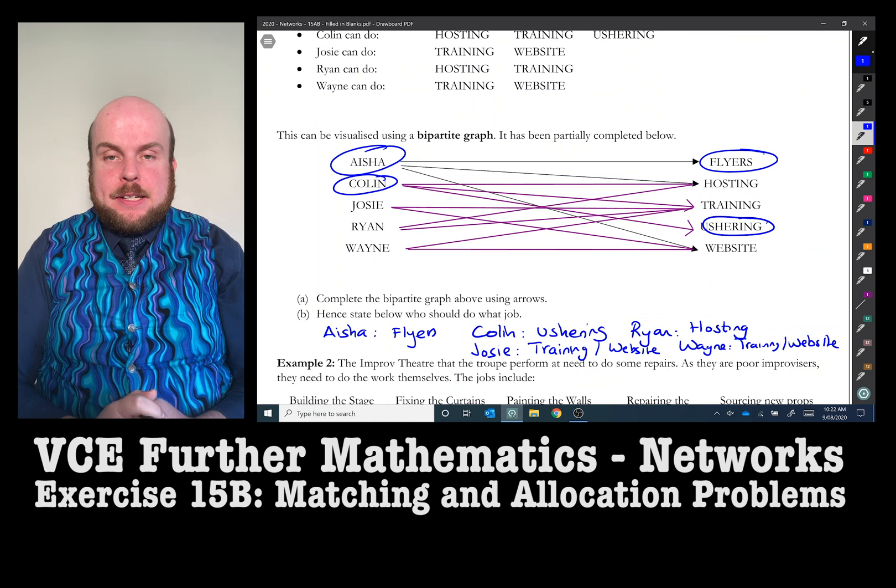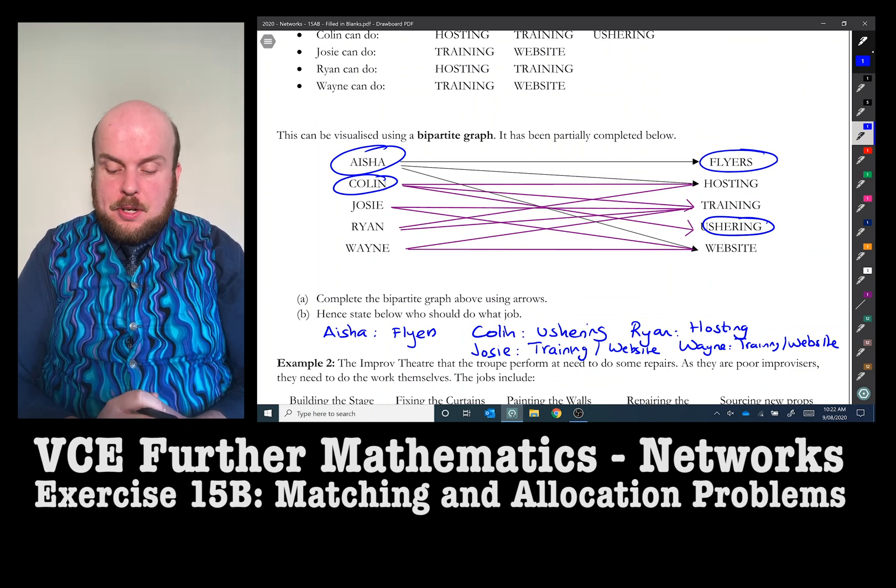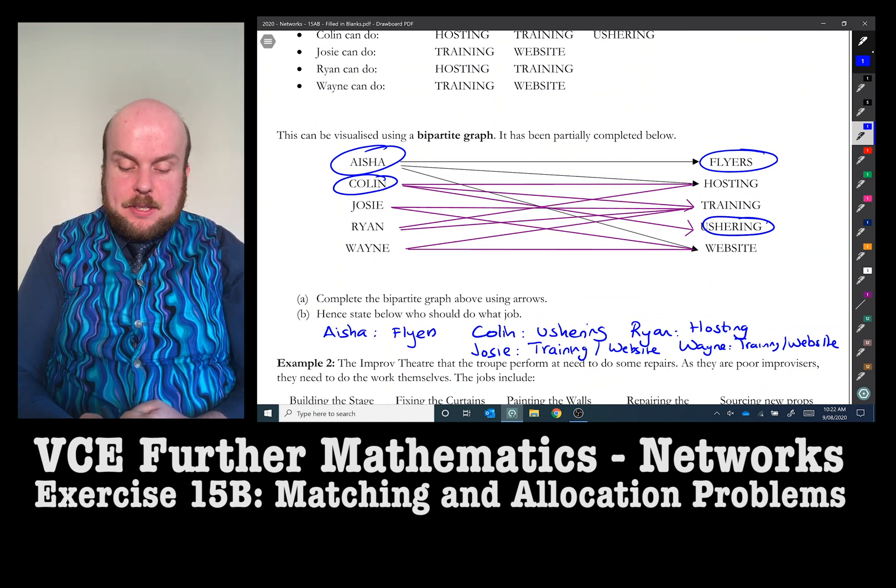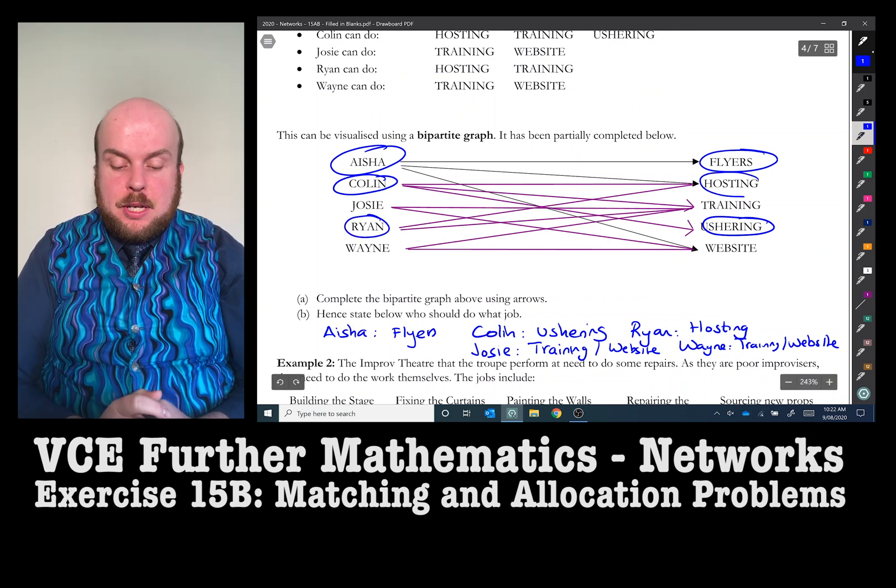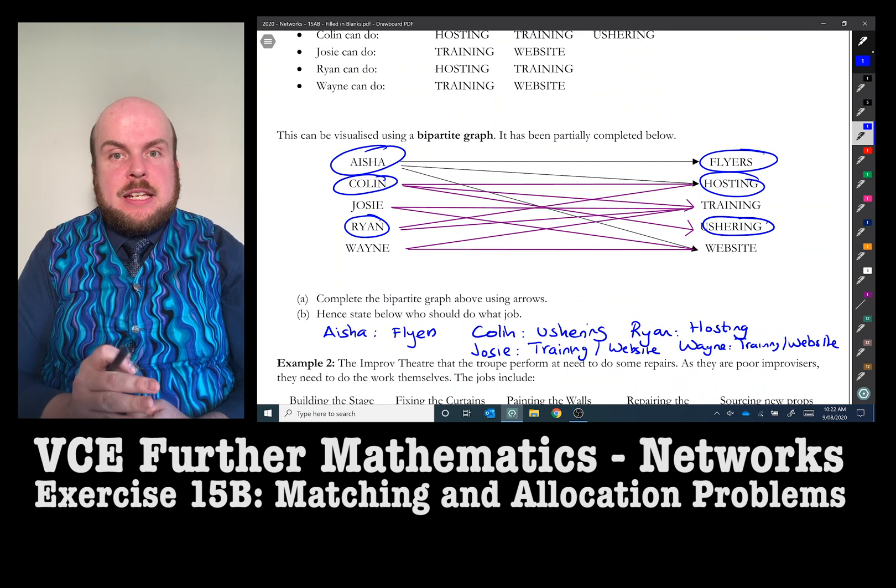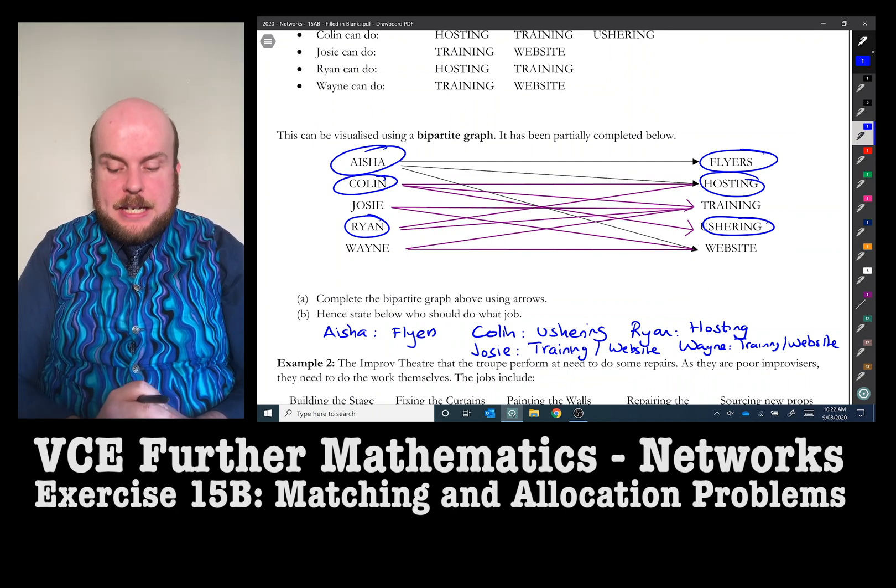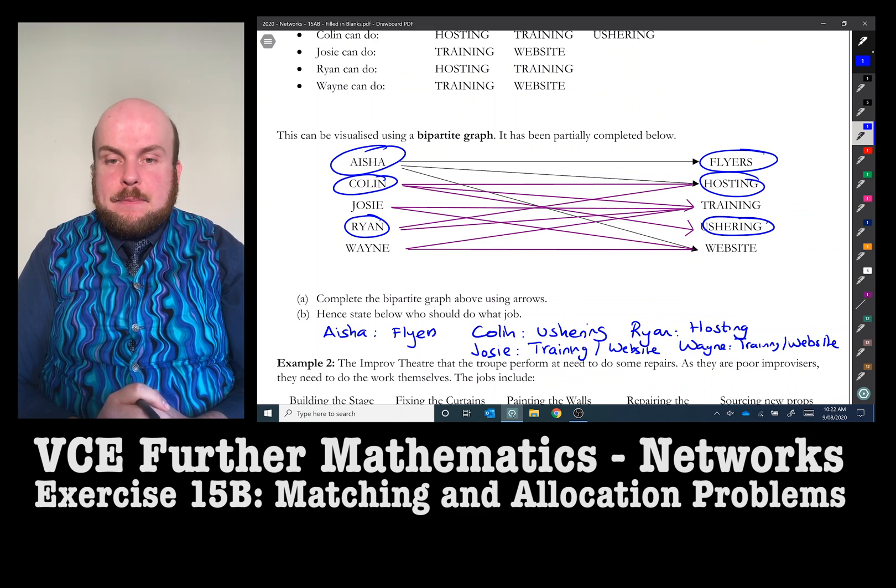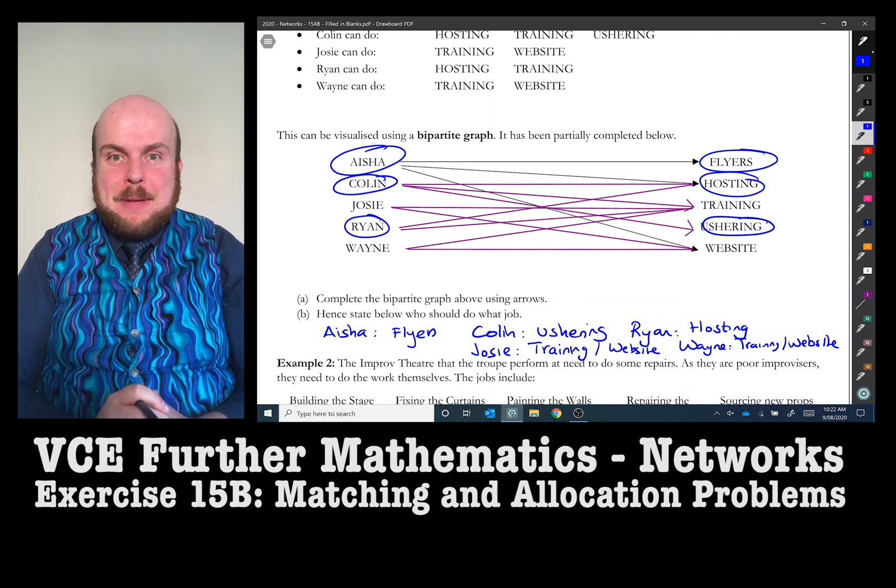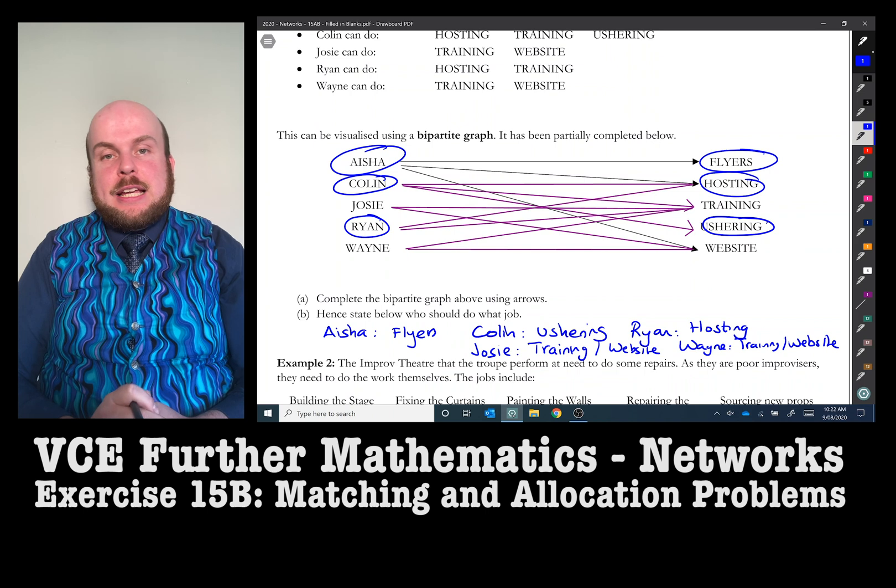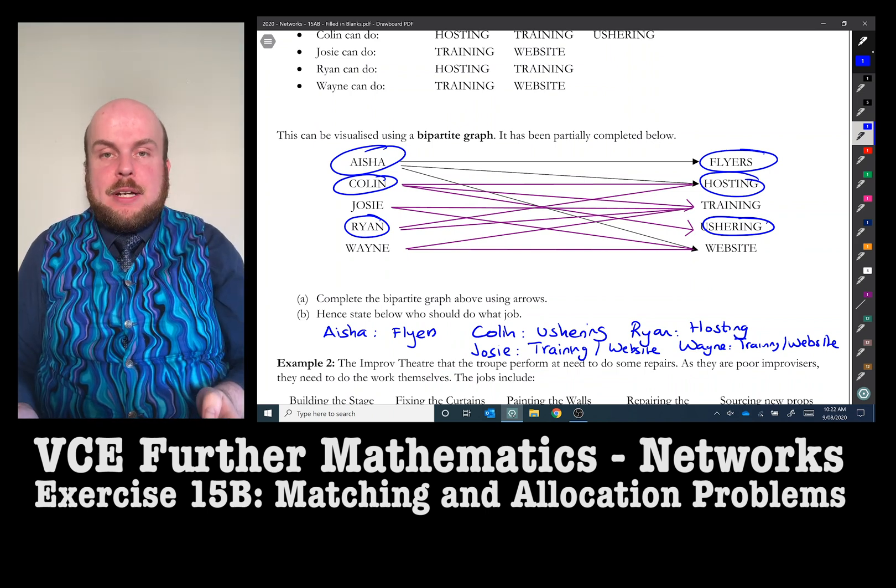So we have drawn our bipartite graph indicating who can do what. And we've been able to see here all the different jobs that people can do. So you start by finding any job that only one person can do and then subsequently make eliminations. In this example, probably because it was poorly written by me, I've got two people that can either do training or the website.